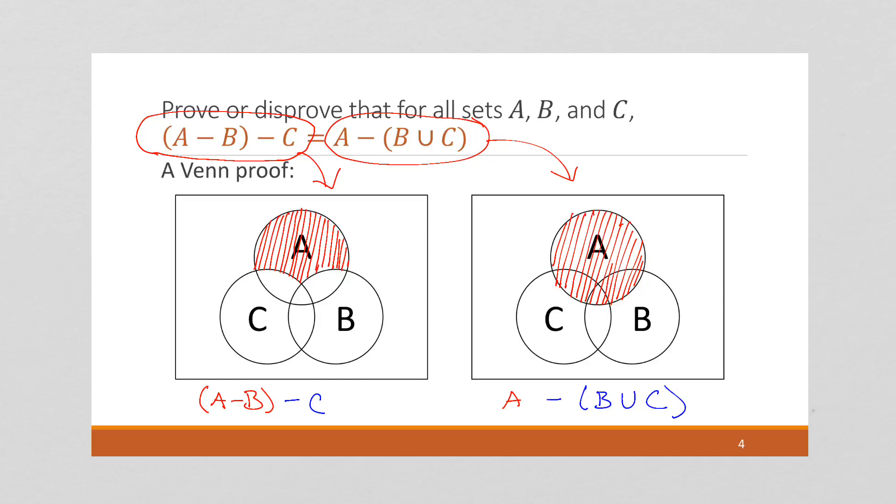Well, B union C is going to be everything that's in B or C. So this is going to be B union C.